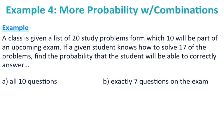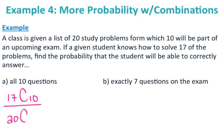This last example is a little more complicated because it incorporates probability with combinations. A class is given a list of 20 study problems, from which 10 will be on the upcoming exam. If a student knows how to solve 17 of the problems, find the probability that the student can correctly answer all 10 questions.